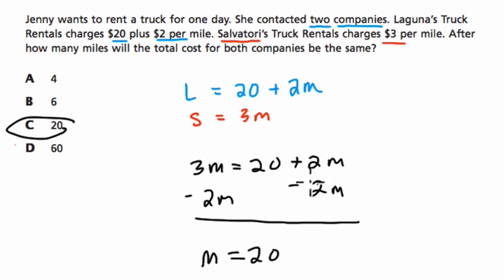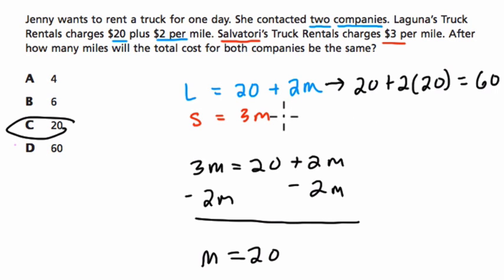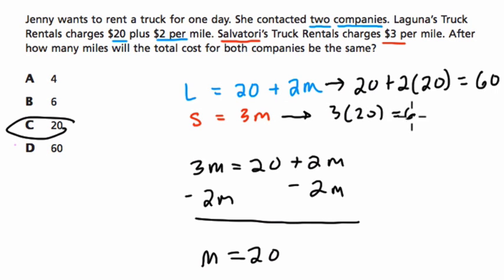And just to check it — you should always check — plug 20 in for both. So we have 20 plus 2 times 20 miles, which is 20 plus 40, which is 60. And then we have 3 times 20, which is also 60, the same cost.